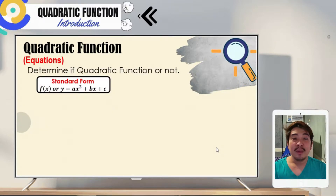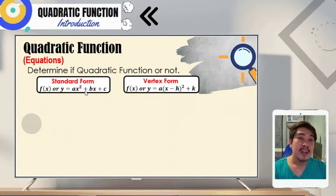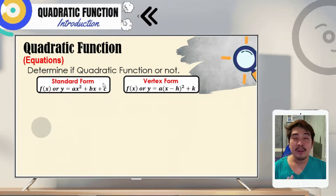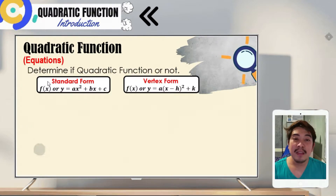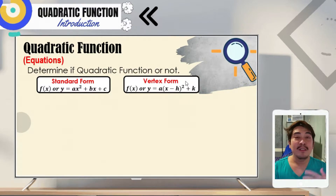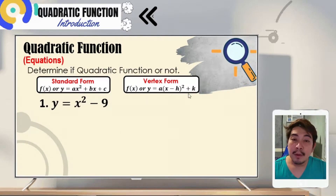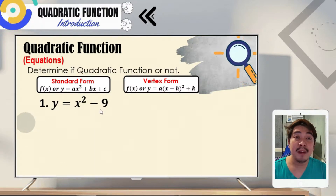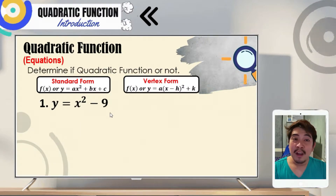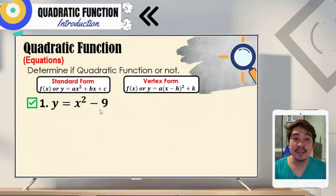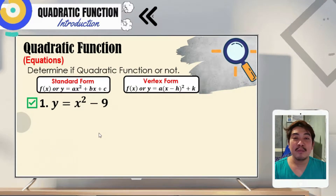Let us now look at examples to determine if each is a quadratic function or not. There are two possible forms: standard form or vertex form. If it can be rewritten in either form, we can say it is a quadratic function. For number 1, we are given y is equal to x squared minus 9. The independent variable x has the highest exponent of 2, so this is a quadratic function in standard form.